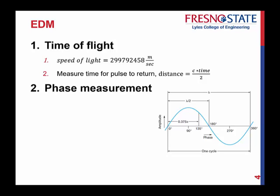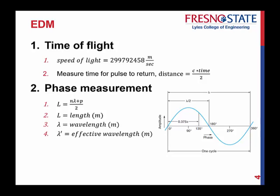The second one we have is what we call phase measurement. Phase measurement is this. Here's your equation, the length, so the distance, is N times lambda plus P over 2. What that really means, let's give you a definition. L is the length, measured in meters. Lambda is the wavelength, also in meters. The effective wavelength is lambda prime, that's just a definition we'll talk about. N is the number of full wavelengths, and P is the length of a fractional part.